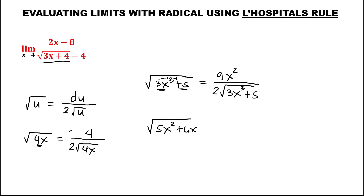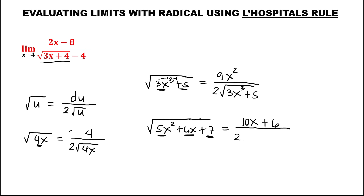If we have the square root of 5x³ minus 6x plus 7, to find the derivative for the numerator: the derivative of 5x³ is 15x². For the denominator, just add 2 then copy the given: so 2 times √(5x³−6x+7). This is how to find the derivative of a square root.